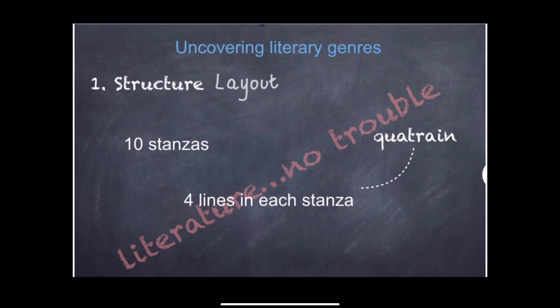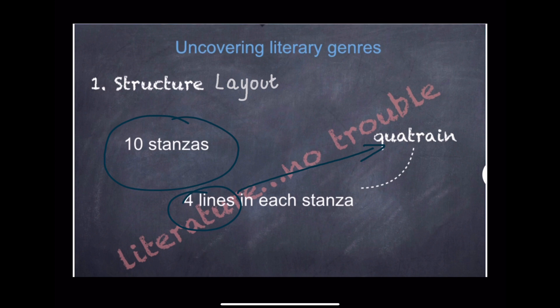First, let's look at the structure and layout of the poem. Lord Rendell is made up of 10 stanzas. Each stanza has four lines — that's why it's called a quatrain. The layout of the poem is very traditional and follows a consistent pattern of questions and answers between Lord Rendell and his mother.